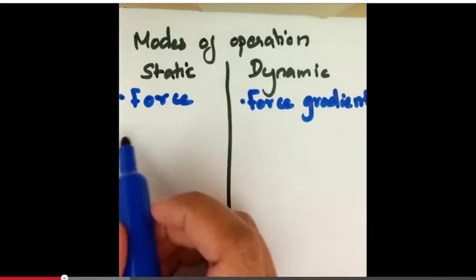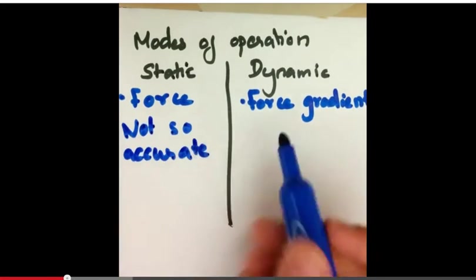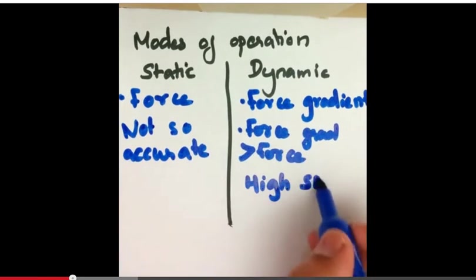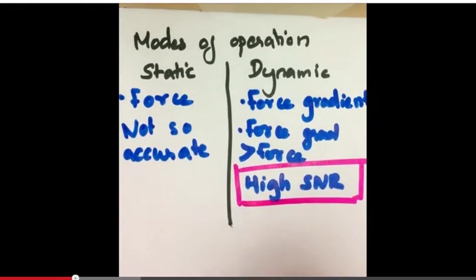The static mode is not so accurate because force measurements generally tend to be small, while in the dynamic mode, since the force gradient measurements are much higher than the force measurements, it provides a higher signal-to-noise ratio. Hence, dynamic mode is preferred over the static mode.